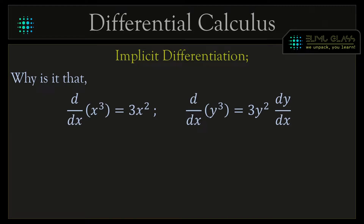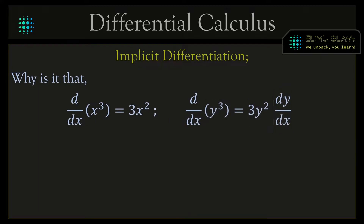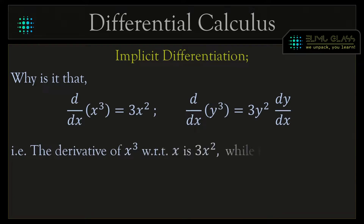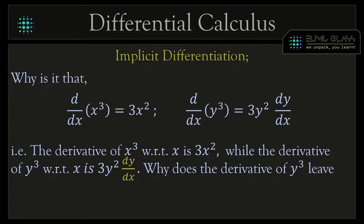Why is it that the derivative of x cubed with respect to x gives us 3x squared, but if we differentiate y cubed with respect to x we get 3y squared with a residue dy by dx? Why does the derivative of y cubed leave a residue while the derivative of x cubed does not?